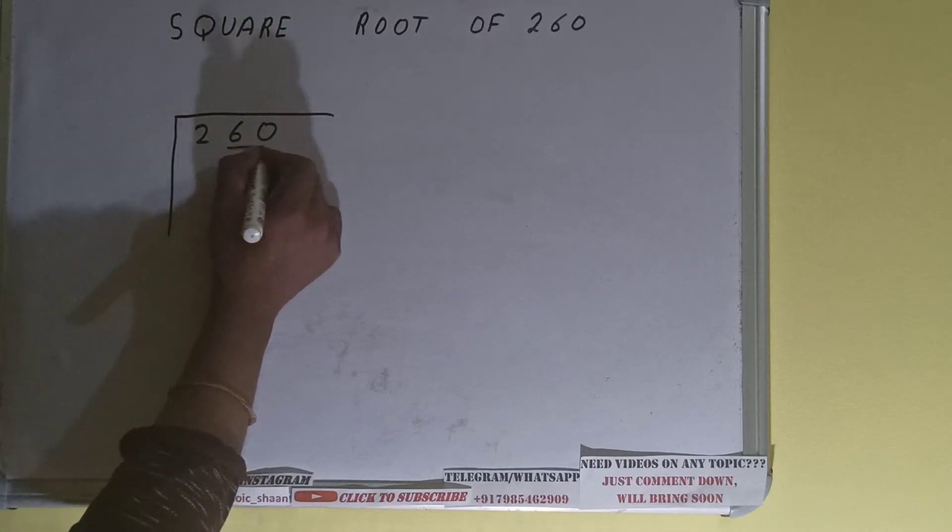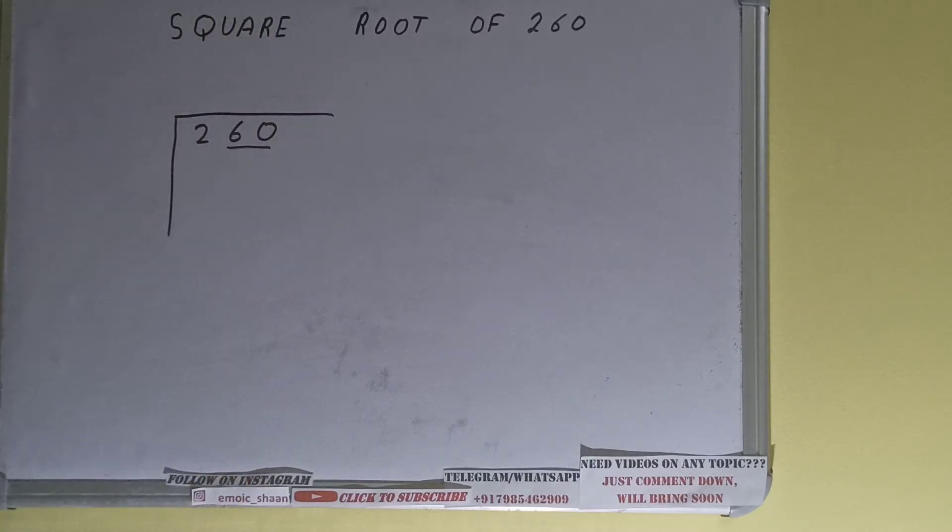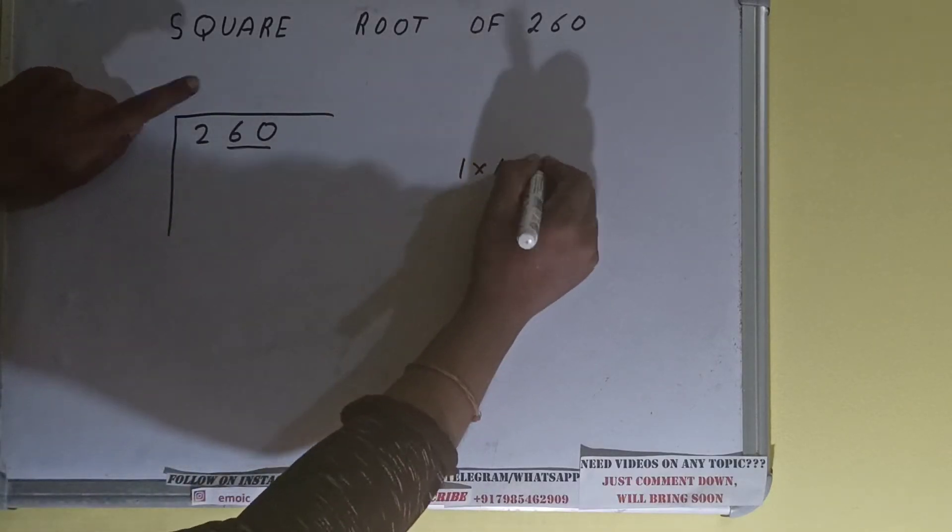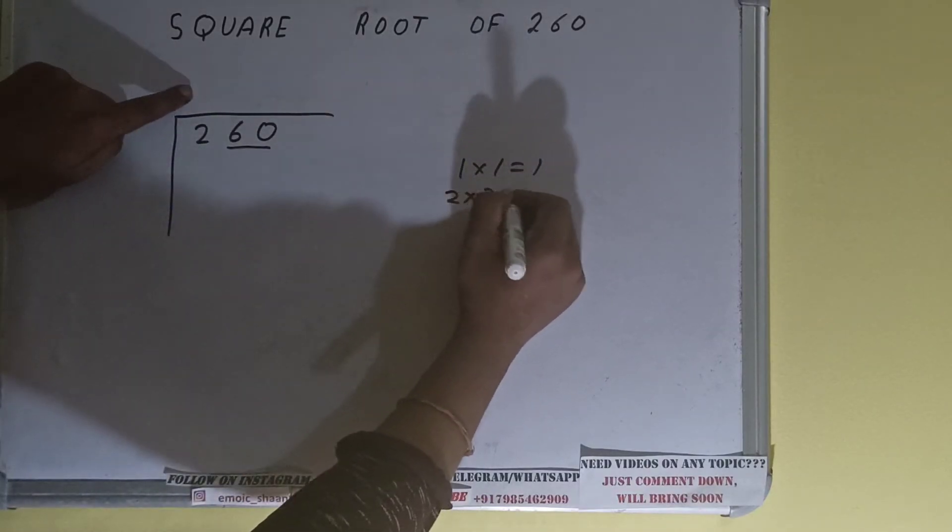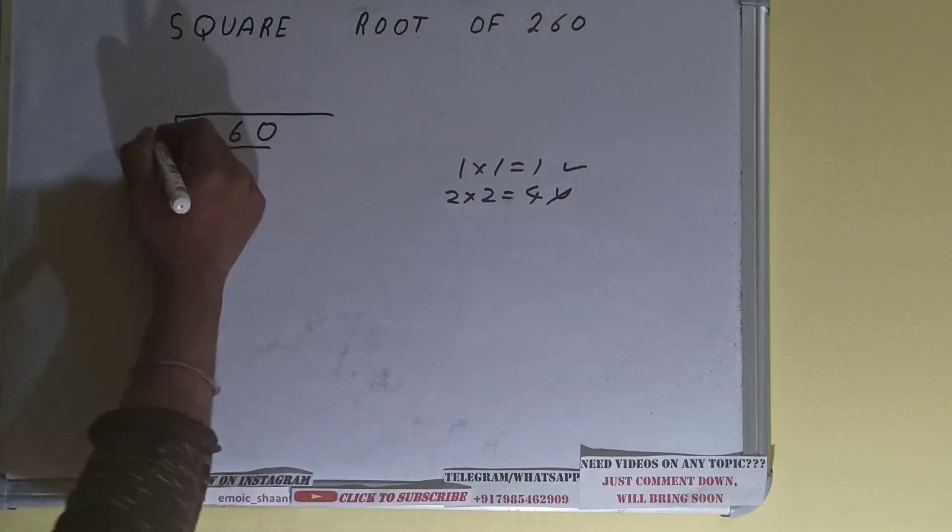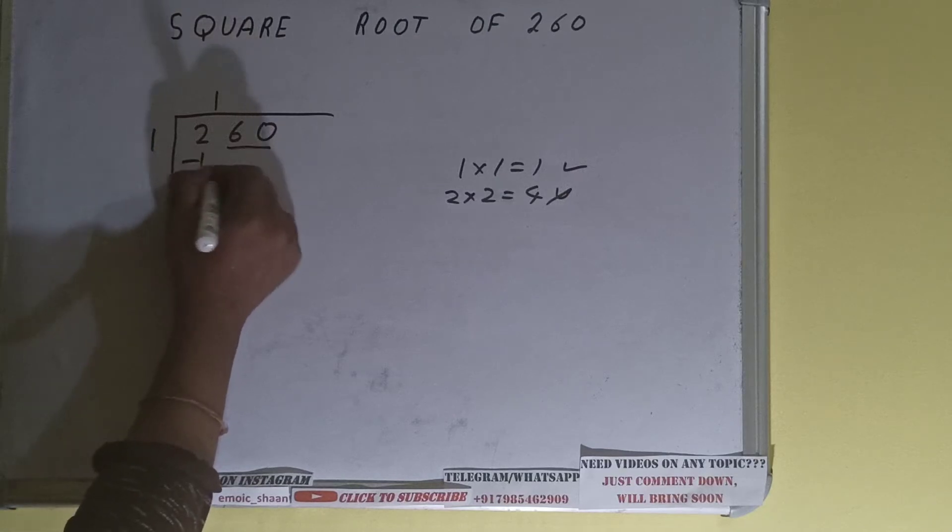Only one pair can be formed and this two will be left out. First we'll divide this two and then bring down the pair. The rule is whatever number we write here we have to write here also. If we write one here and one here it will give one. If we write two here and two here it will give four. Four we cannot use because four is greater than two, so we have to go with one. One here and one here will give one, subtract it.